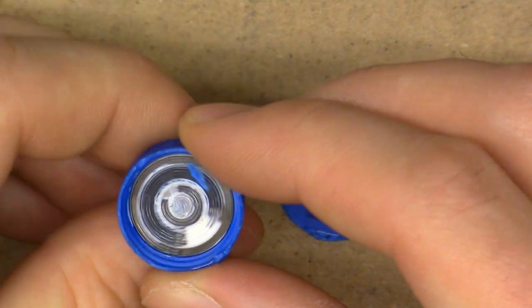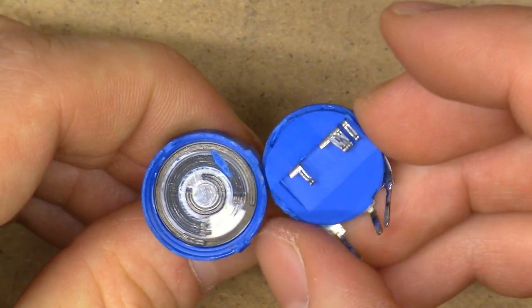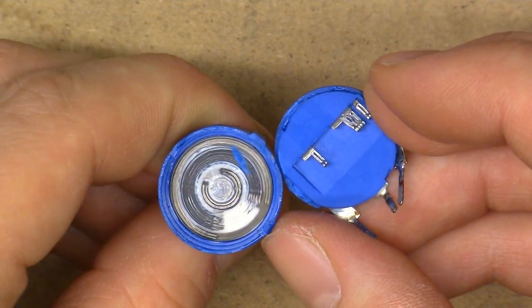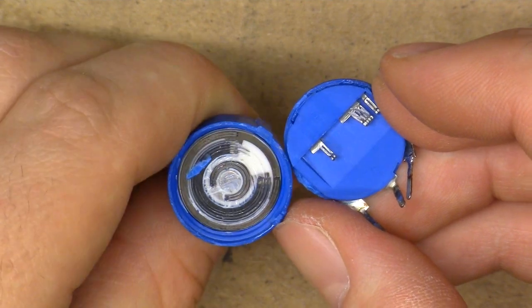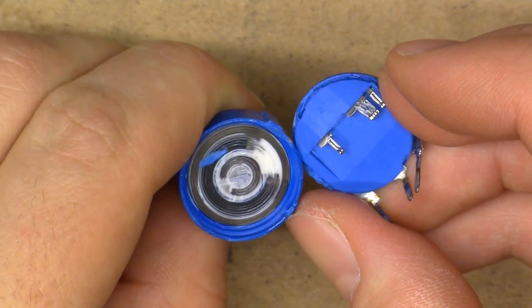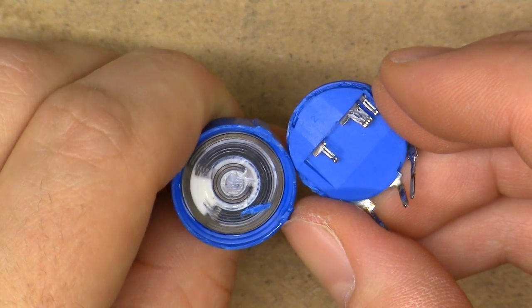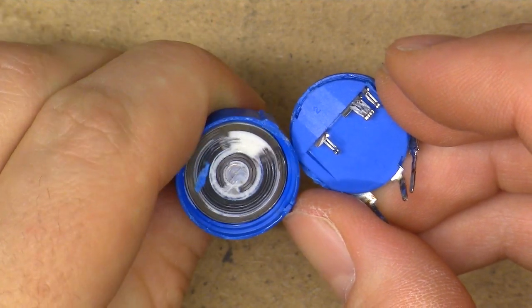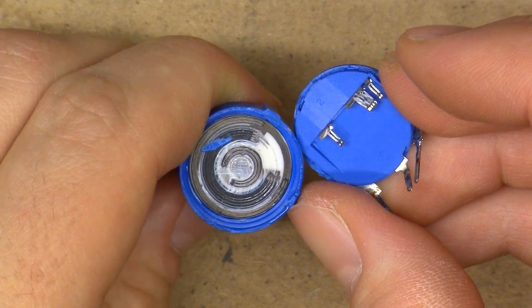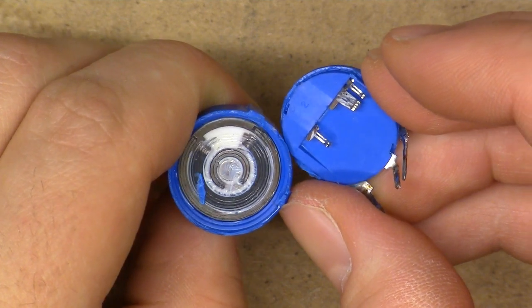But it's clearly not just a generic Chinese potentiometer. That's really a fancy solution they've got going on there with the rotating trace rather than the rotating contact. In fact, it's really clever since they can just do away with one of the normal slip contacts.